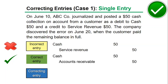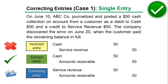The cash debit $50 part is correct. However, the incorrect part is the service revenue. In order to eliminate the service revenue — which is a credit in the incorrect entry — I have to put it as a debit in the correcting entry. Also, in order to have a correction, accounts receivable should be credit. So combining the correcting entry with the incorrect entry: cash is debit with no other cash transaction, service revenue credit and debit cancel out and are eliminated, and we are left with accounts receivable credit $50 — leading us to the correct entry.